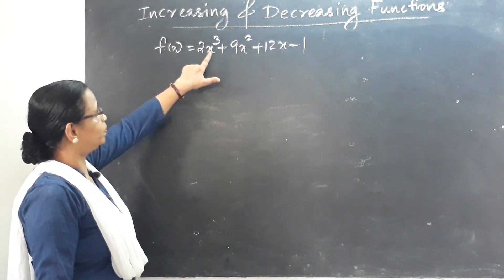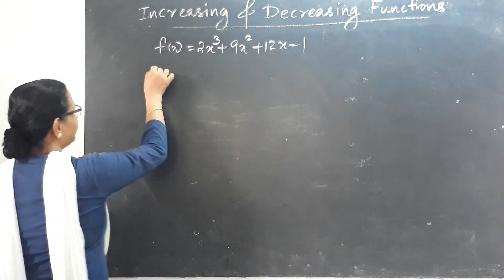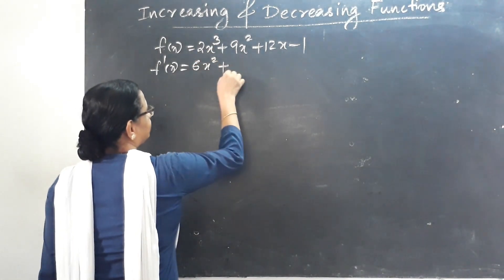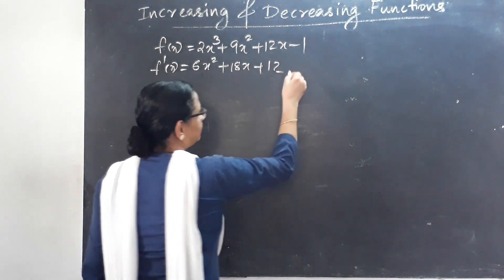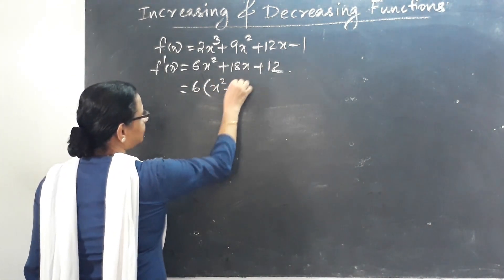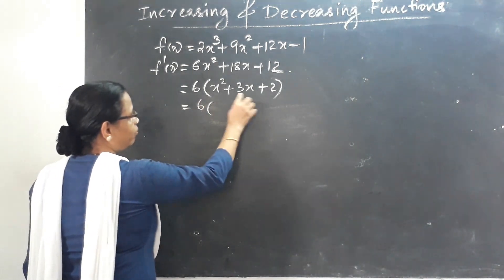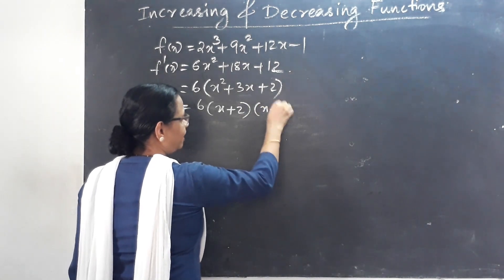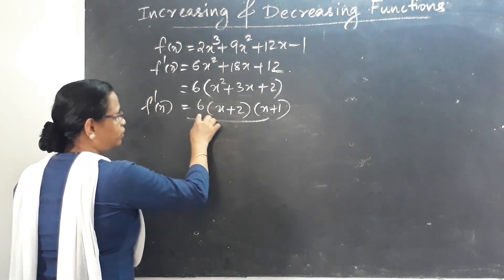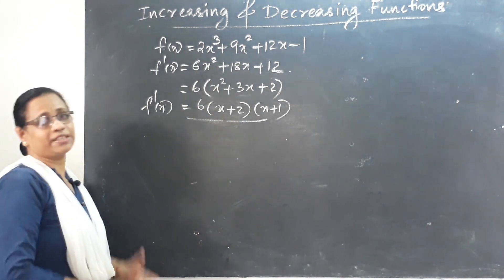For f(x) = 2x³ + 9x² + 12x - 1, find the increasing and decreasing intervals. f'(x) = 6x² + 18x + 12 = 6(x² + 2x + 1) — wait, factorising: f'(x) = 6(x + 1)(x + 2). The critical points are x = -1 and x = -2.